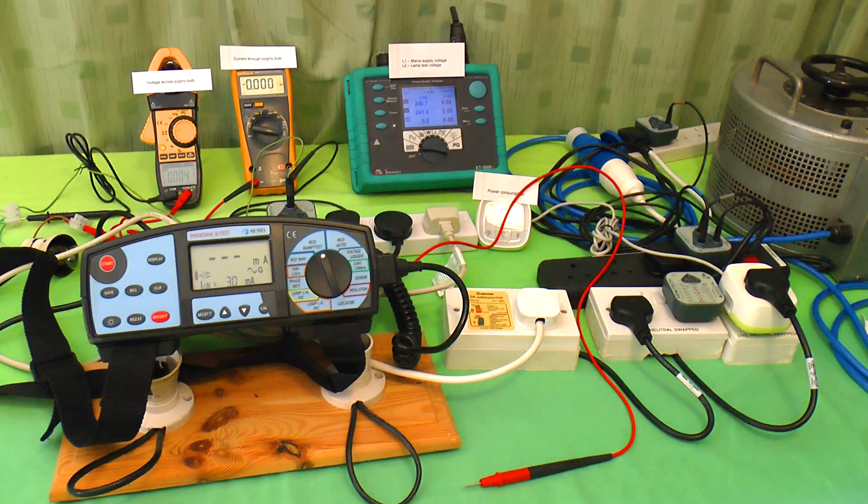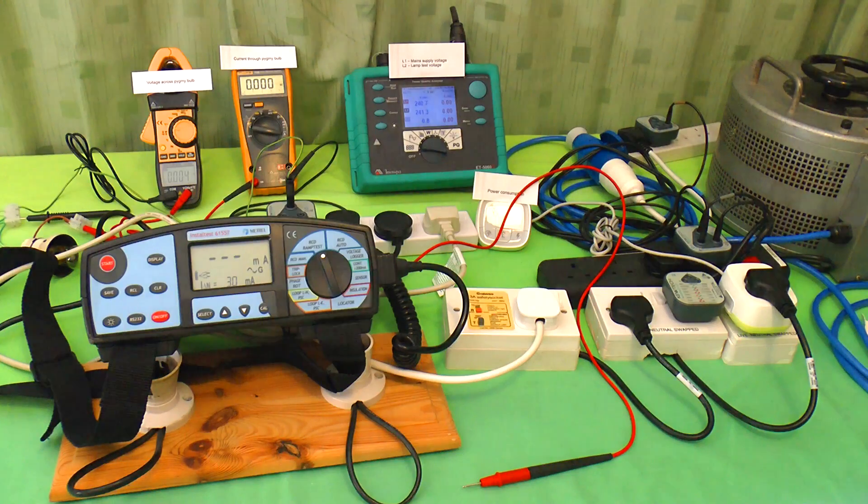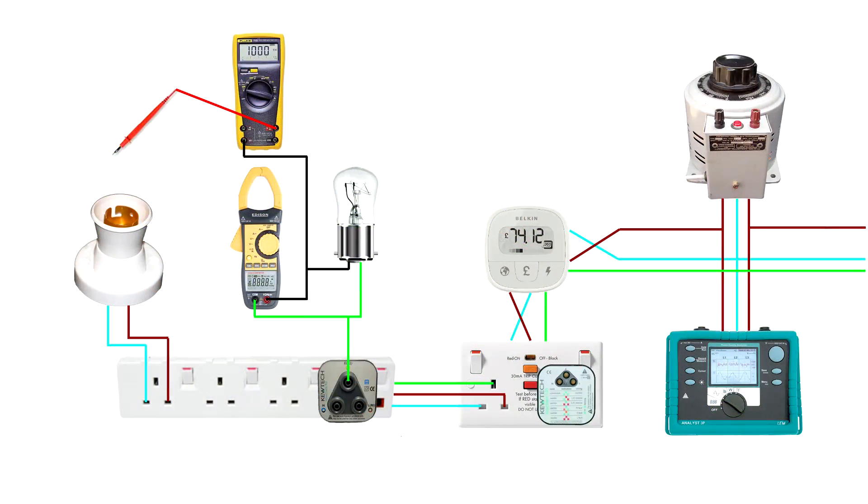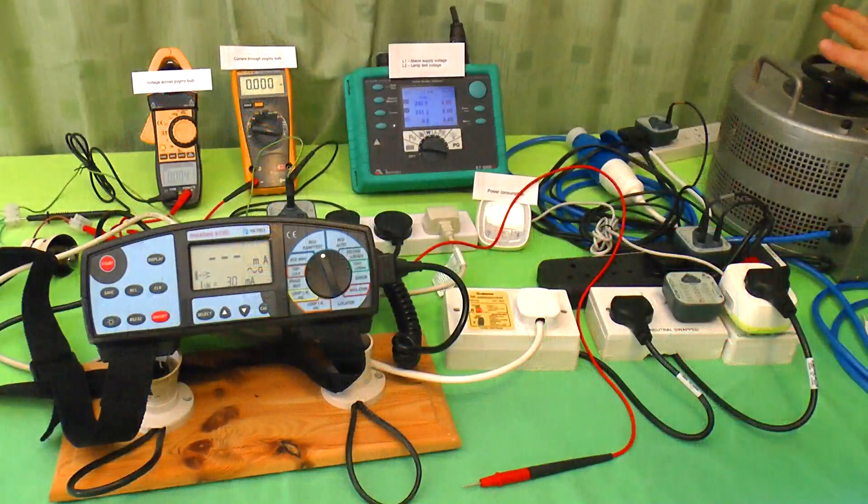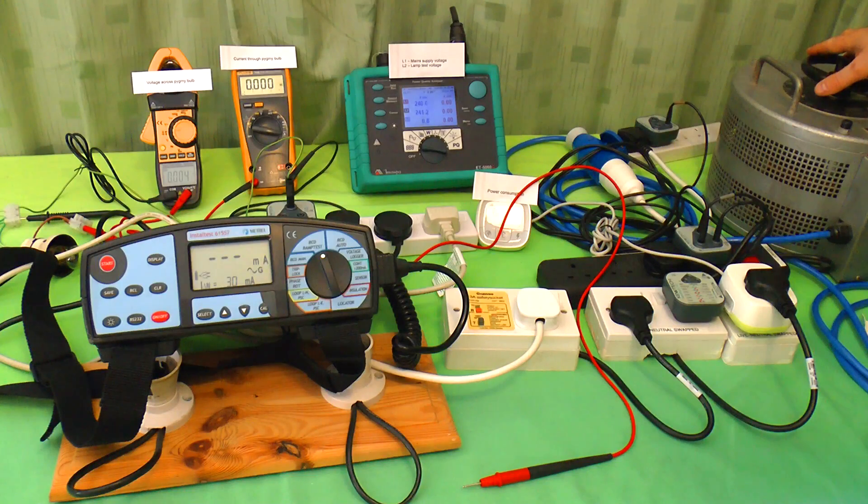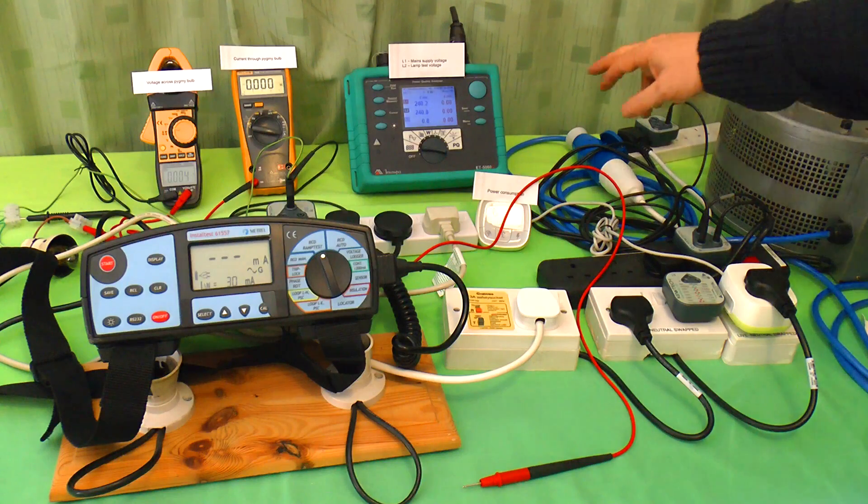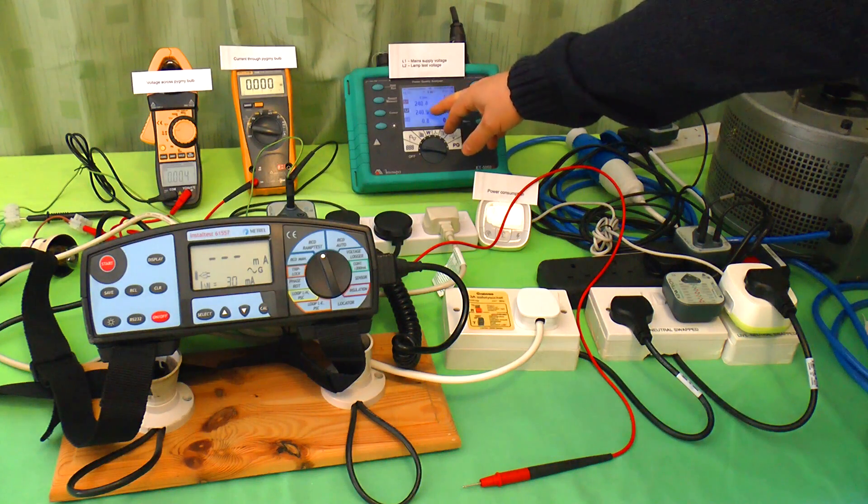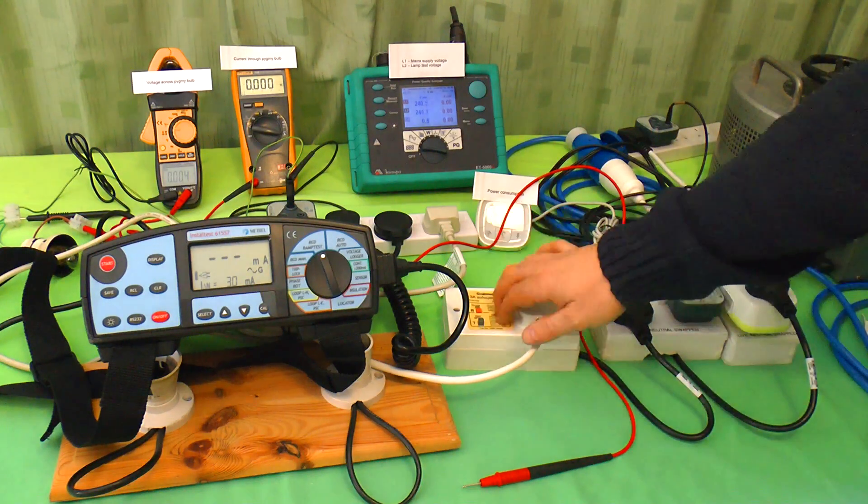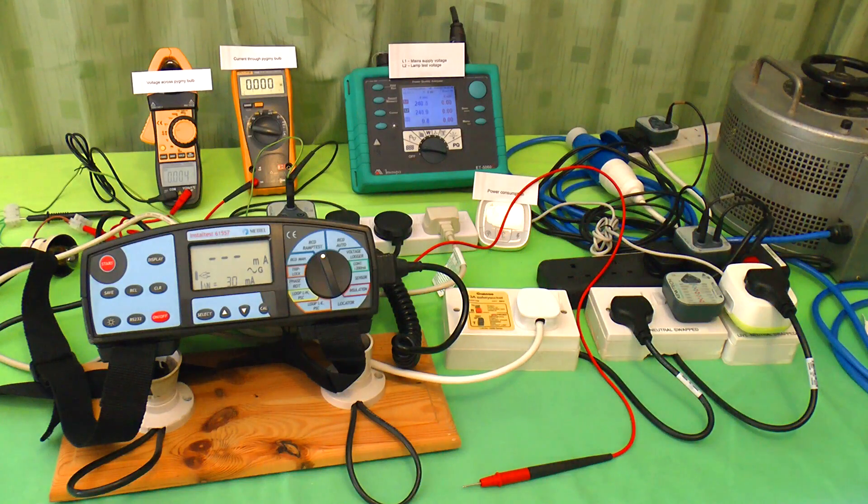Here we have what at first looks like quite a complicated test setup, but in fact it's quite simple. This allows me to adjust the mains voltage for testing, which in the UK tends to be between 230 and 240 volts. This shows the input main supply and the output test voltage. This is an RCD protected socket.